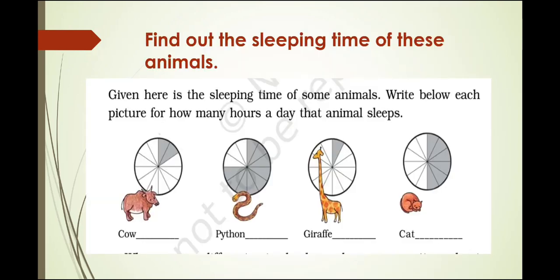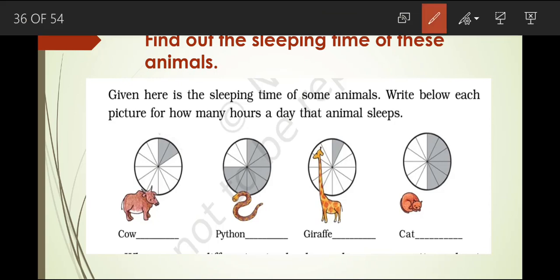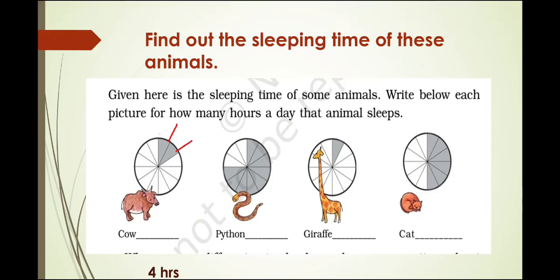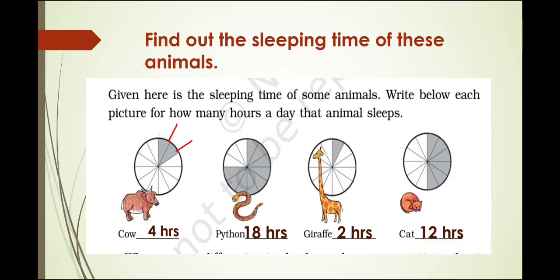Similarly, you have to count the sleeping time of the cow — that is, count the shaded portion. The cow sleeps for 4 hours. Similarly, the python sleeps for 18 hours, the giraffe sleeps for 2 hours, and the cat sleeps for 12 hours.